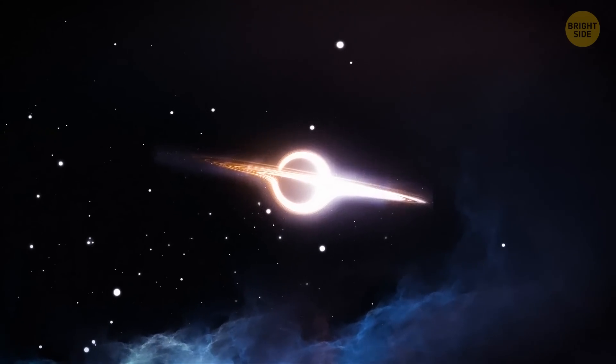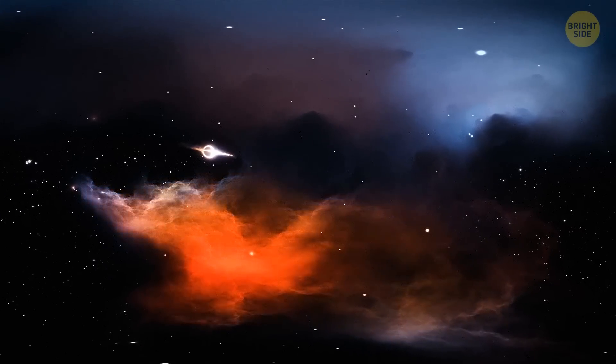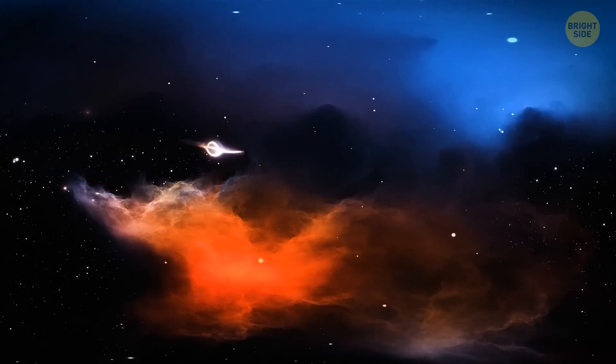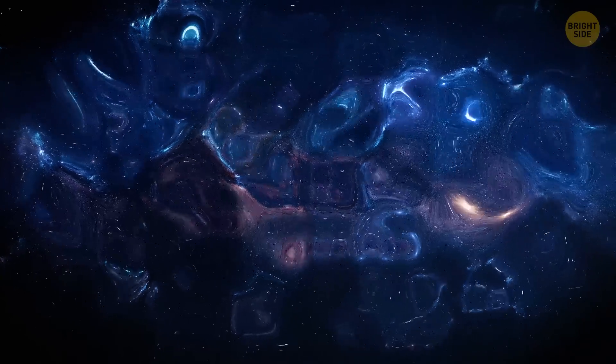If primordial black holes indeed existed, they could appear because in some regions of space it was hotter, other regions were cooler, and some areas were extremely dense. Scientists believe these dense spots could collapse into primordial black holes.